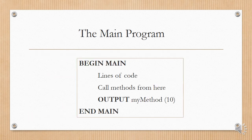For your main program: if you have a main program that calls methods, you go BEGIN MAIN, put all your lines of algorithm code, and call your methods from here — for example, output myMethod(10) to use the method from the previous example, then END MAIN. If you want to see examples of how to use all these constructs and methods in algorithms, please watch the next video, which has a few examples in it.